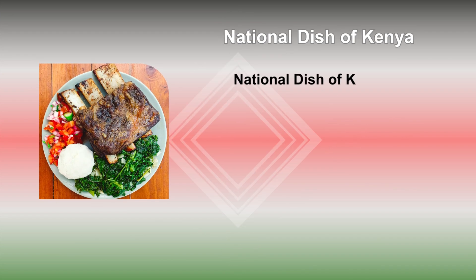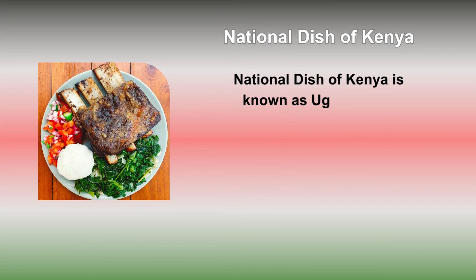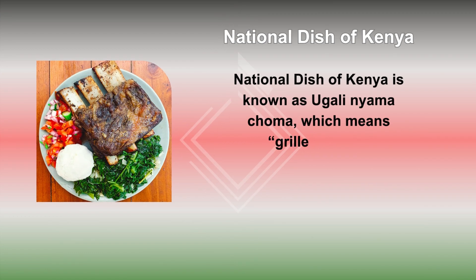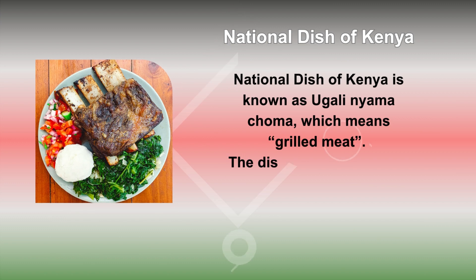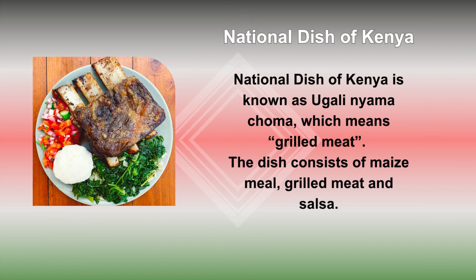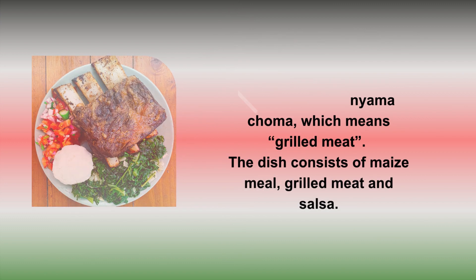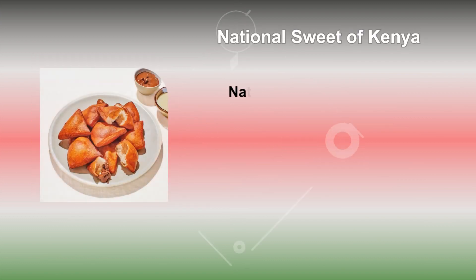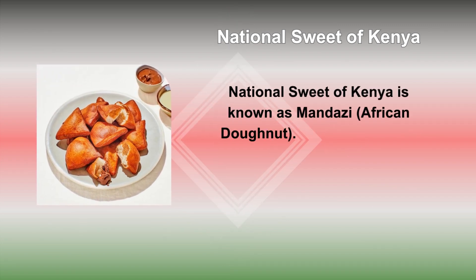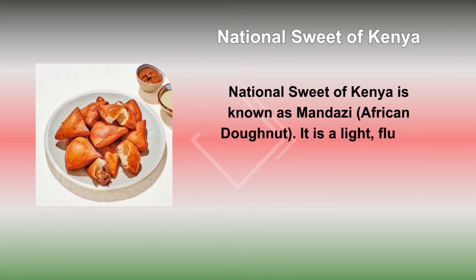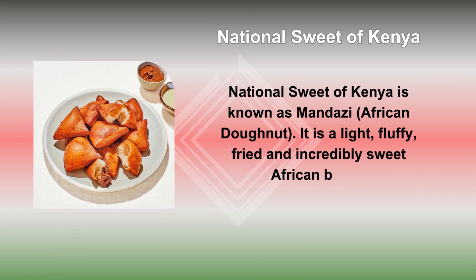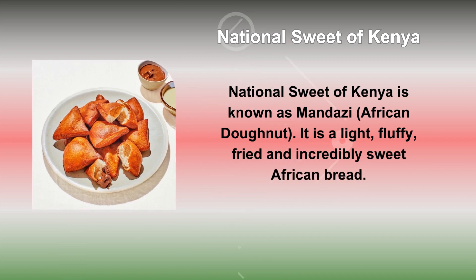The National Dish of Kenya is known as Ugali Nyama Choma, which means grilled meat. The dish consists of maize meal, grilled meat, and salsa. The National Sweet of Kenya is known as Mandazi, the African Donut. It is a light, fluffy, fried, and incredibly sweet African bread.